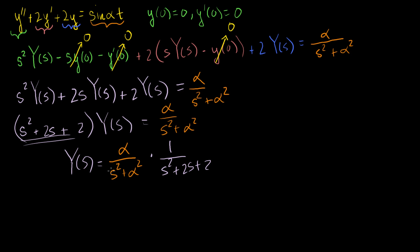Remember, we're doing this in the context of convolution. We want to look for a Laplace transform that looks like the product of two Laplace transforms. I know the inverse Laplace transform of alpha over (s² + alpha²) is sine of alpha t. If I can find the inverse Laplace transform of the other factor, I can express y(t) as a convolution integral.